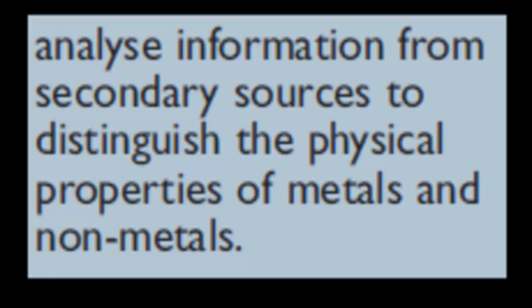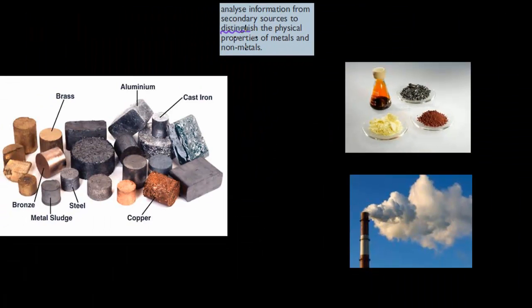What we're going to do in this video, we're going to cover the next dot point, which says analyze information from secondary sources to distinguish the physical properties of metals and non-metals. So what we have to do in this dot point is distinguish. Distinguish means we need to be able to tell the difference between metals and non-metals in terms of physical properties.